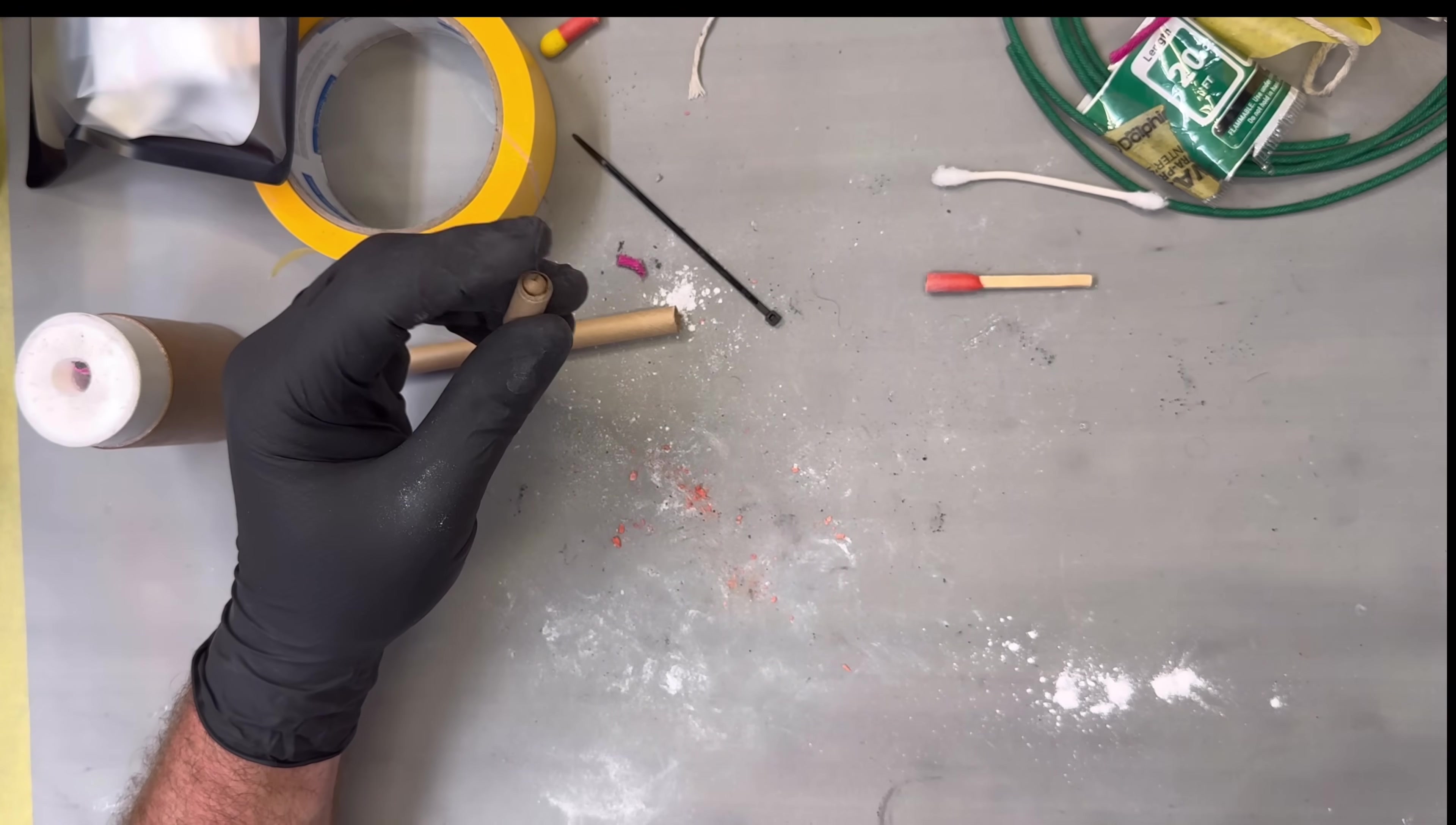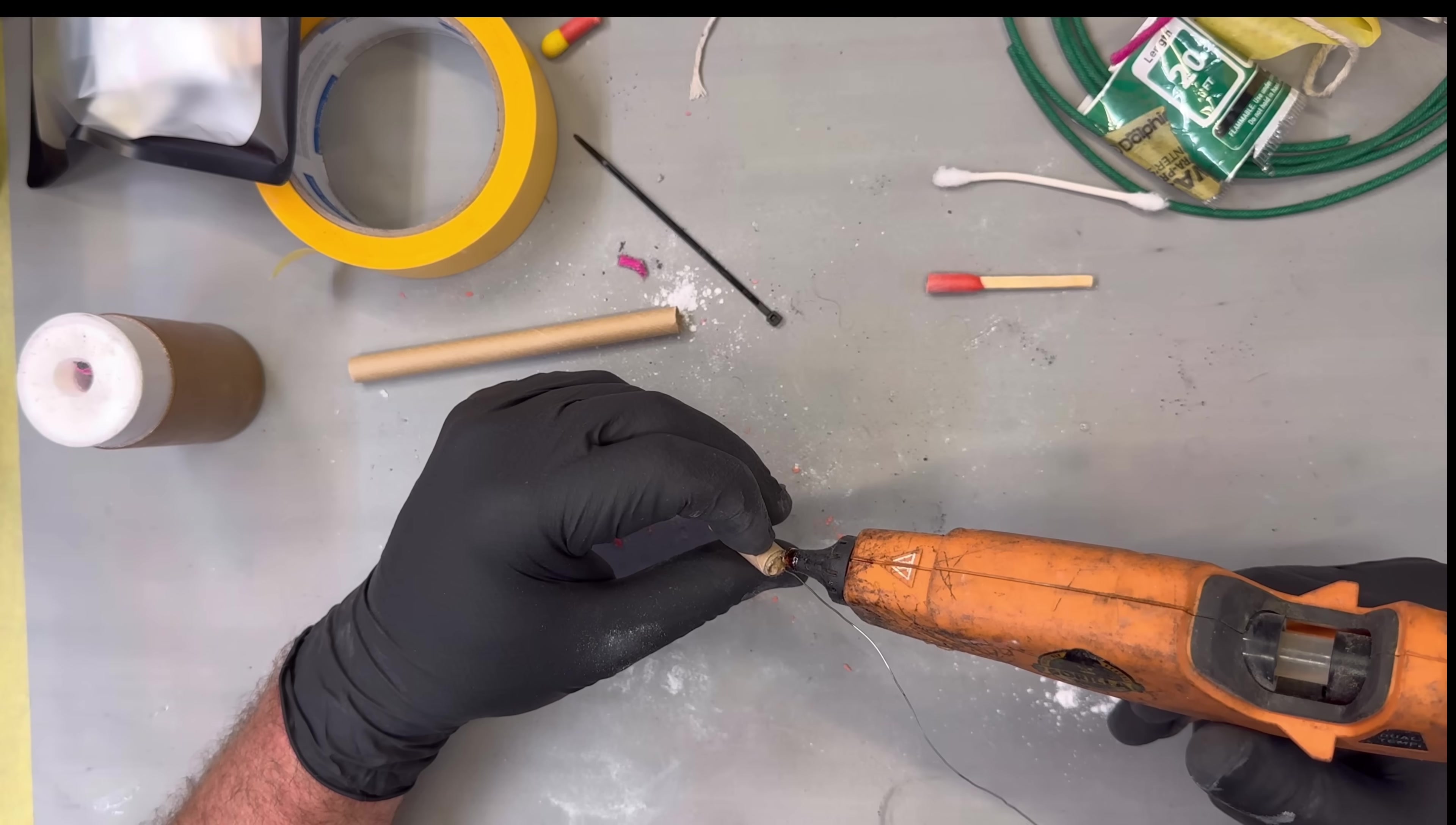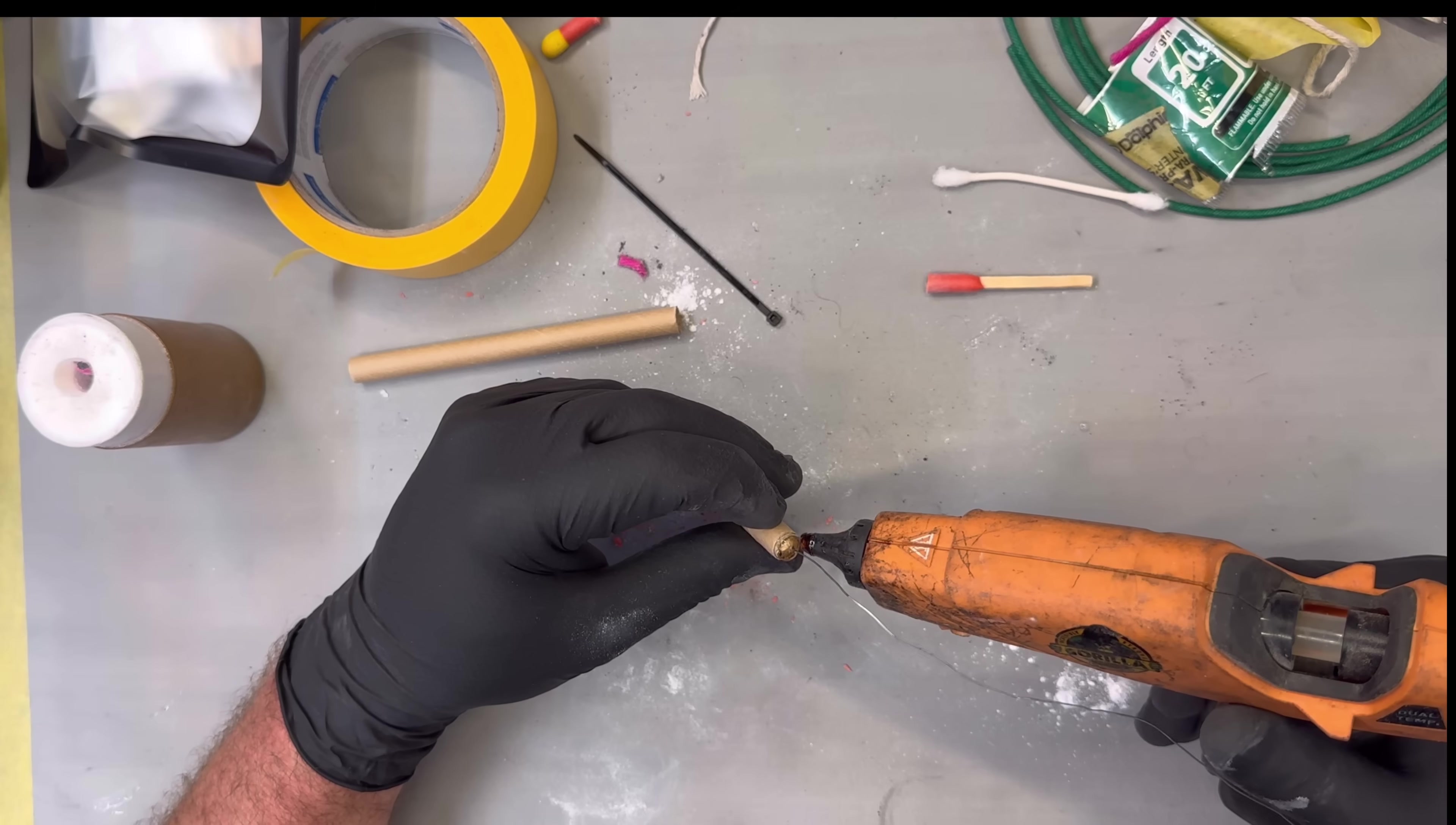I'm using a hot glue gun, which is a different procedure from normal. Normally I'd use CA glue, but what we're doing here is we're making an igniter that's ejected as soon as it heats up.